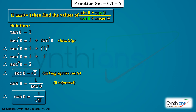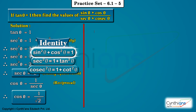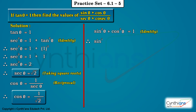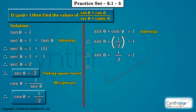We applied identity and then reciprocal for sec theta and cos theta. Now again let us go to identity. For cos theta we have the identity: sin square theta plus cos square theta is equal to 1. Therefore sin square theta plus (1 upon root 2) whole squared is equal to 1. Sin square theta plus 1 upon 2 is equal to 1.